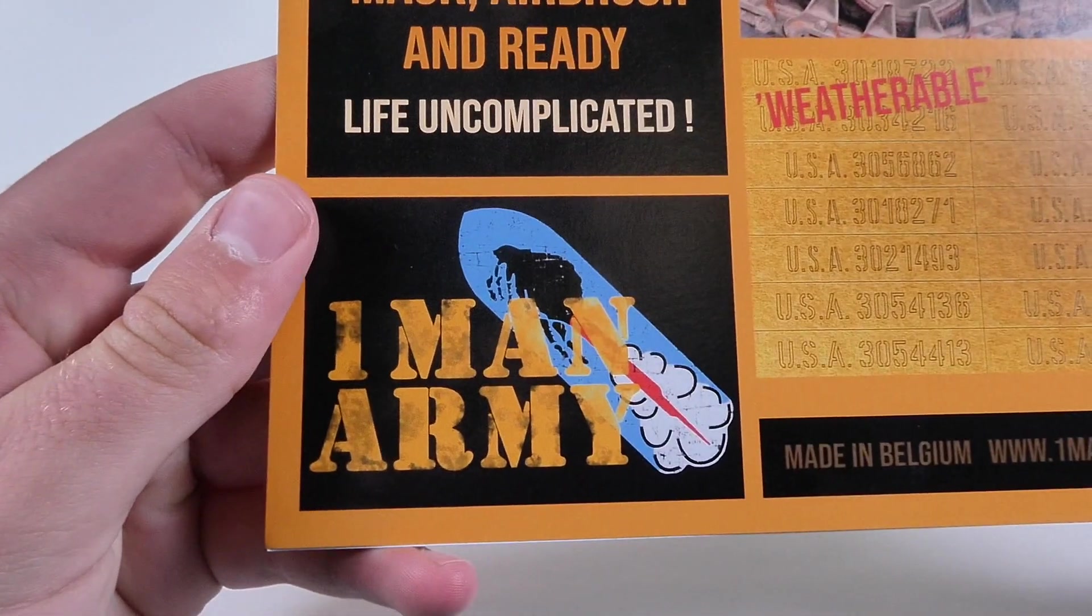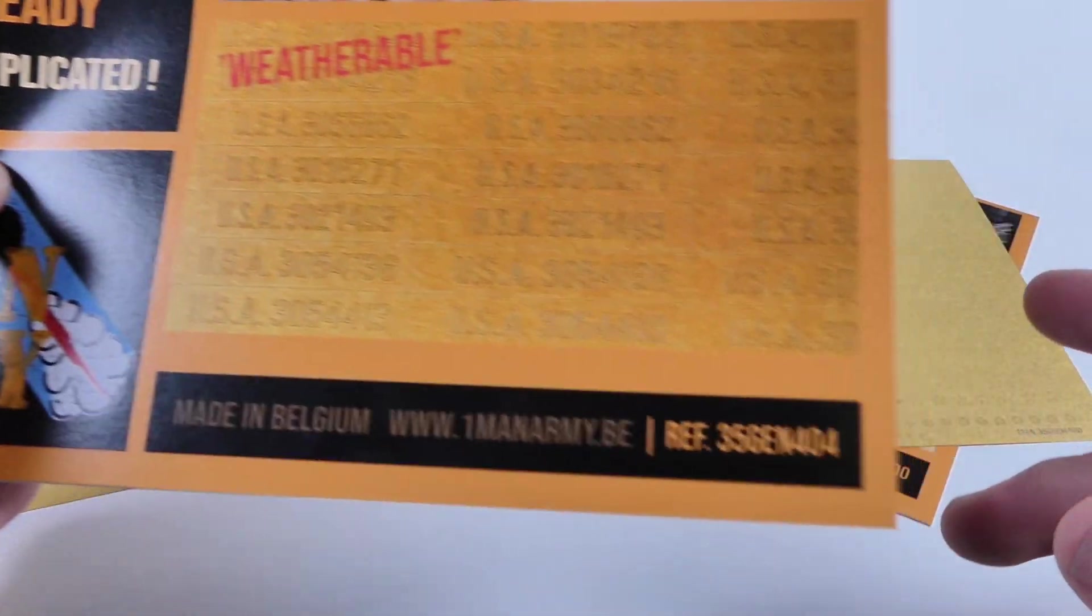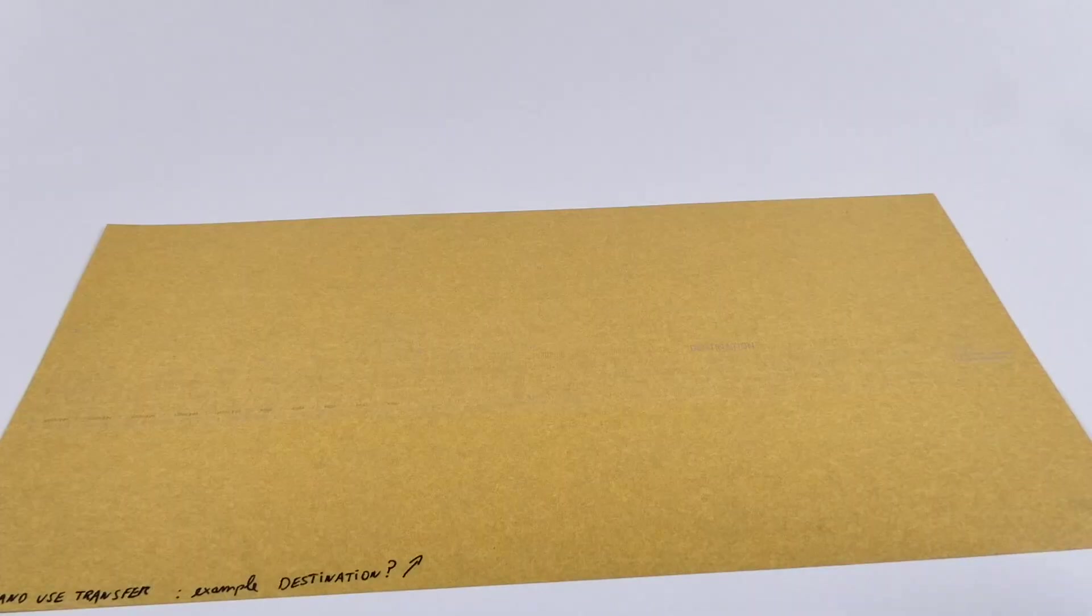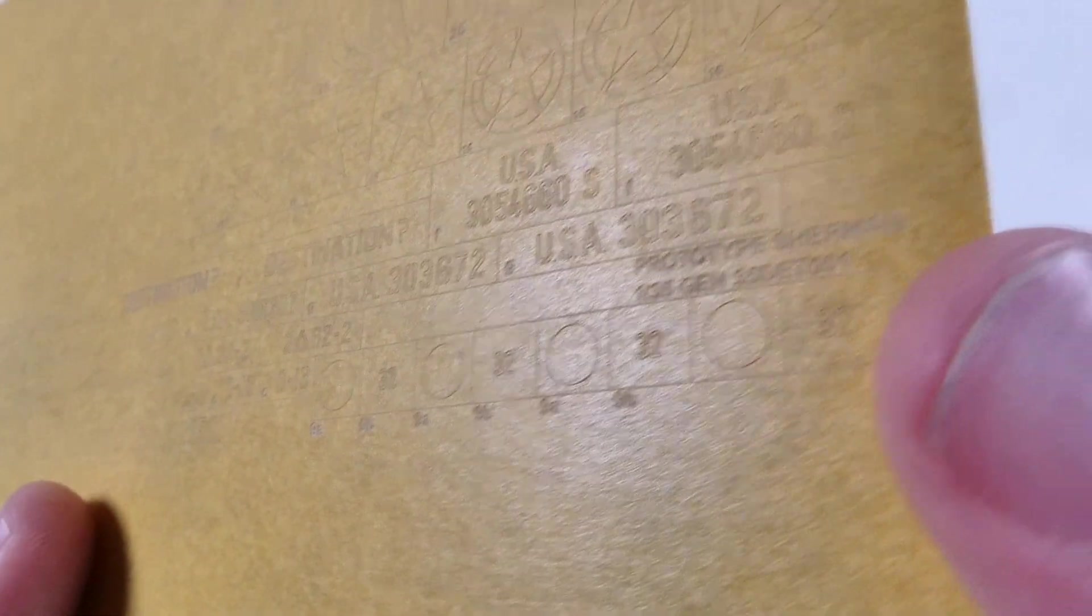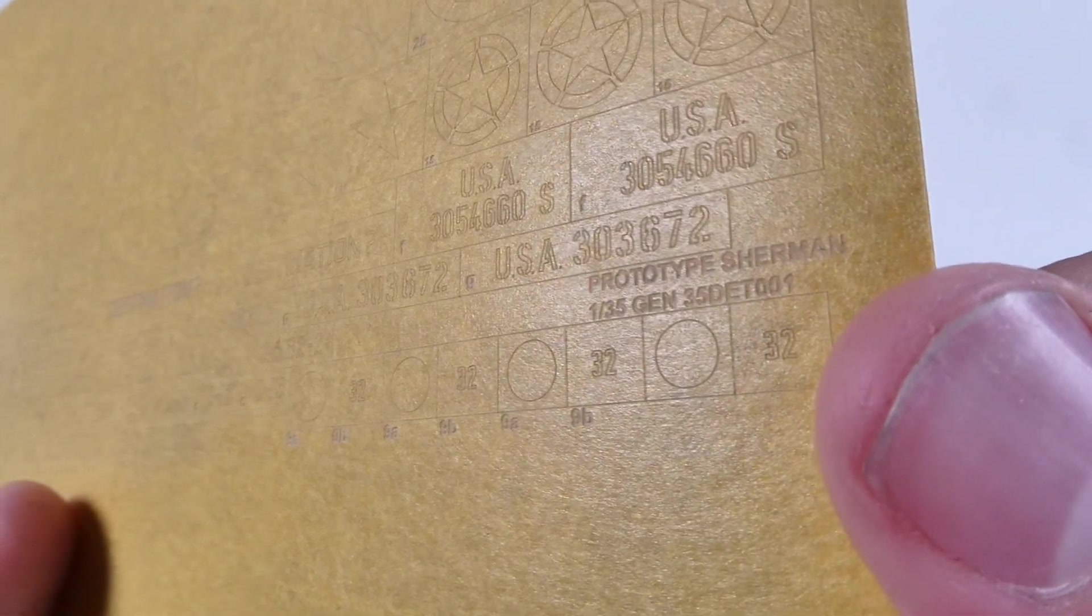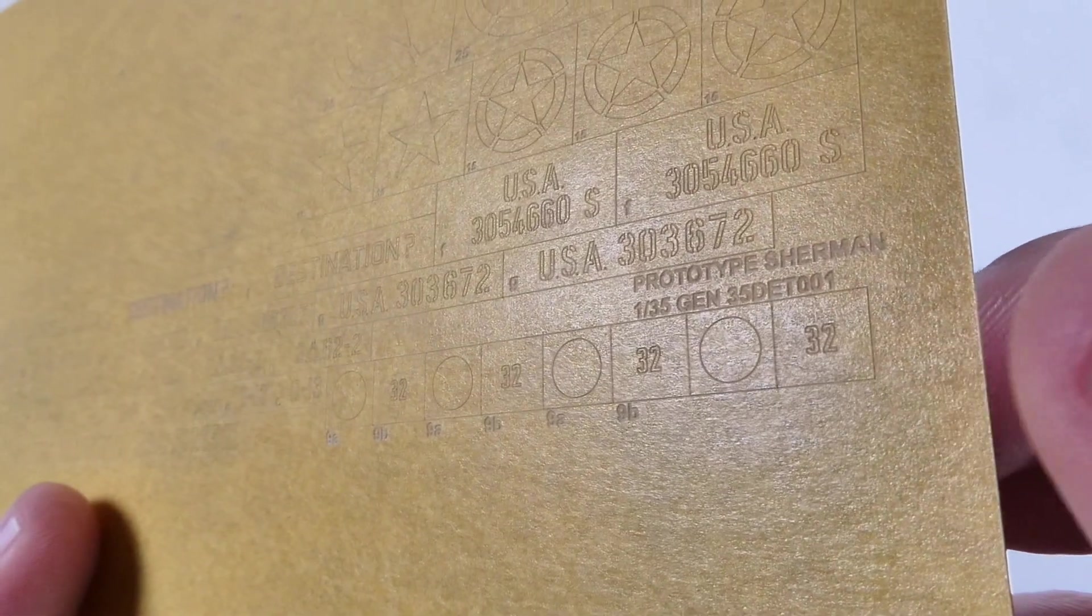I do think that there are some things that could be changed, however. As you can see here, we have some of the prototype masks that Sven and I were working on when we were developing the set. I think that the main thing that could be changed is that there are no unit numbers or vertical serial numbers in the production serial numbers set.